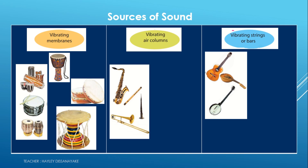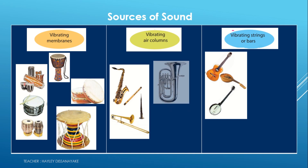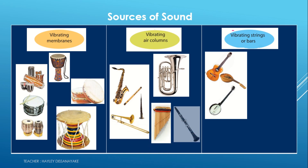The second type is objects which produce sound by vibrating air columns. Examples include the flute, clarinet, and trumpet.